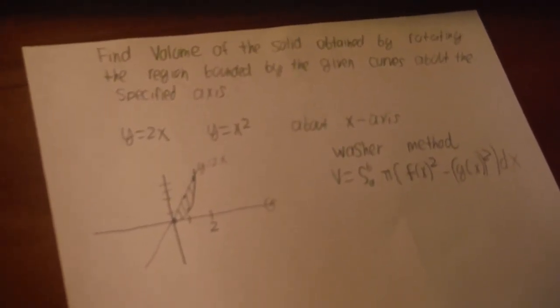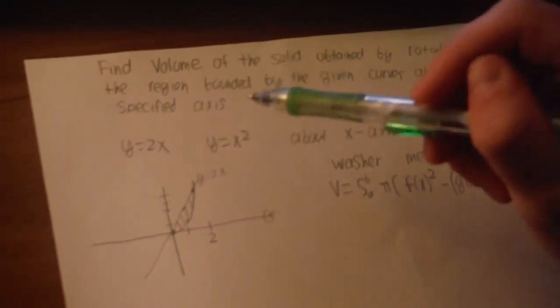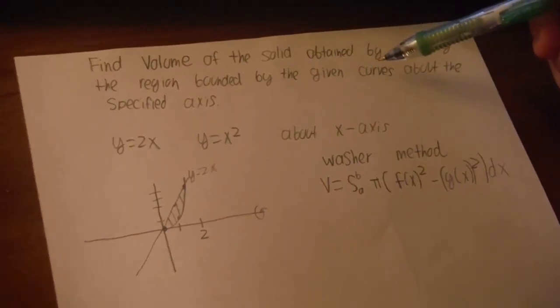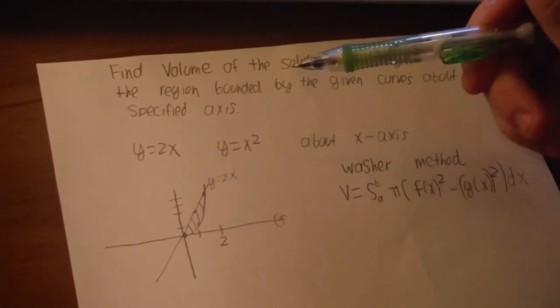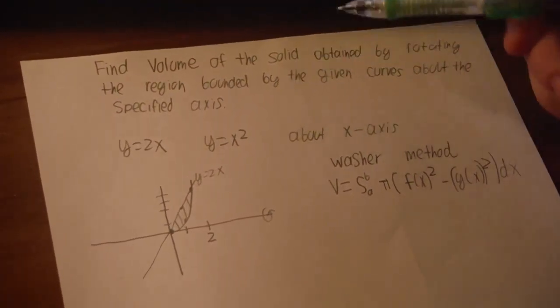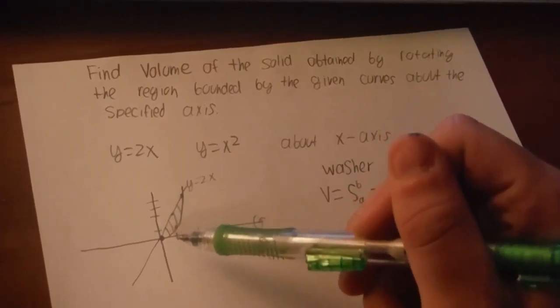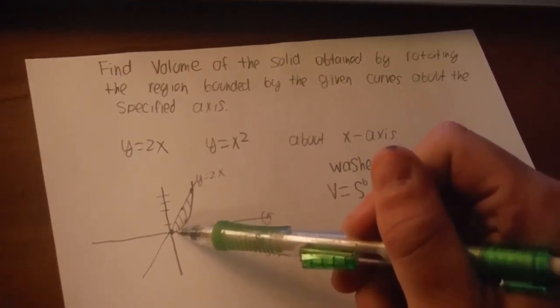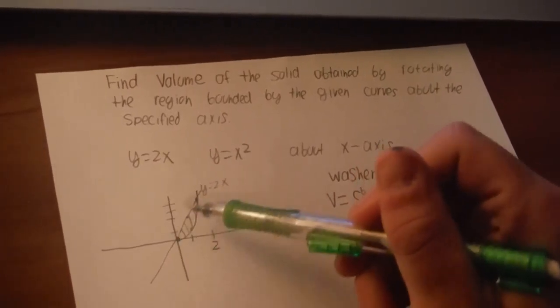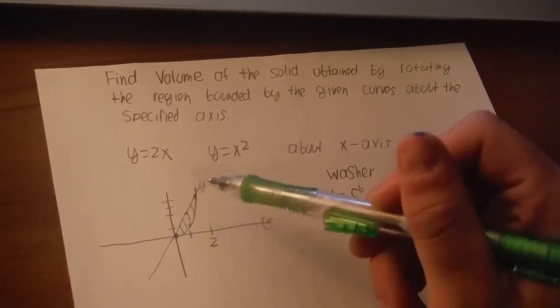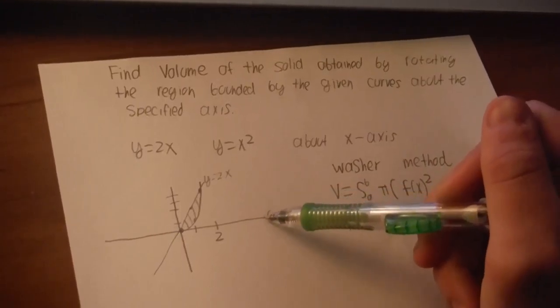The problem is finding the volume of the solid obtained by rotating the region bounded by the given curves about the specific axis. We have two curves, y equals 2x and y equals x squared, graphed here. x squared, this is 2x, this is the region, and this is being rotated about the x-axis.